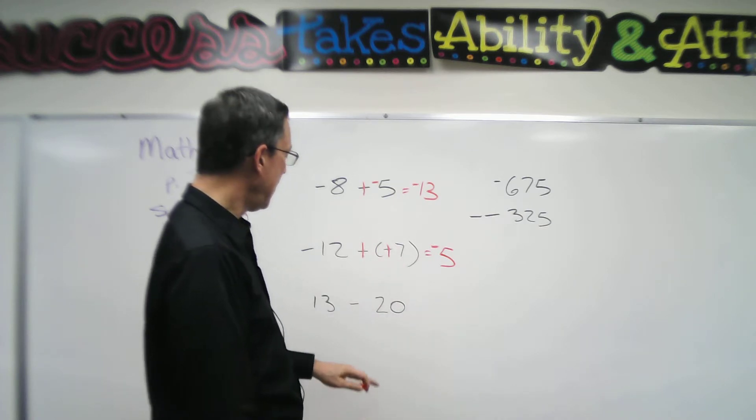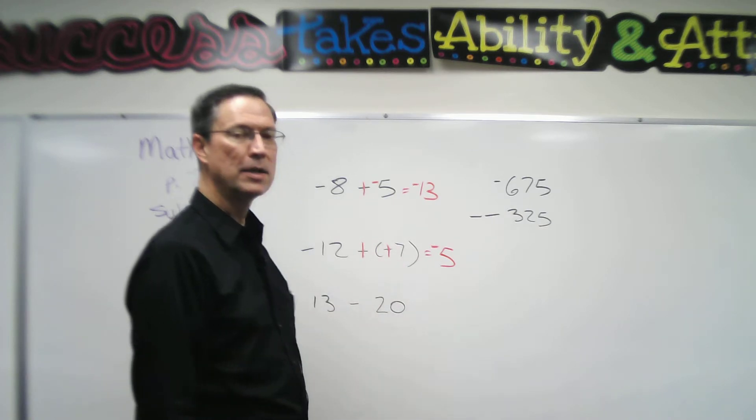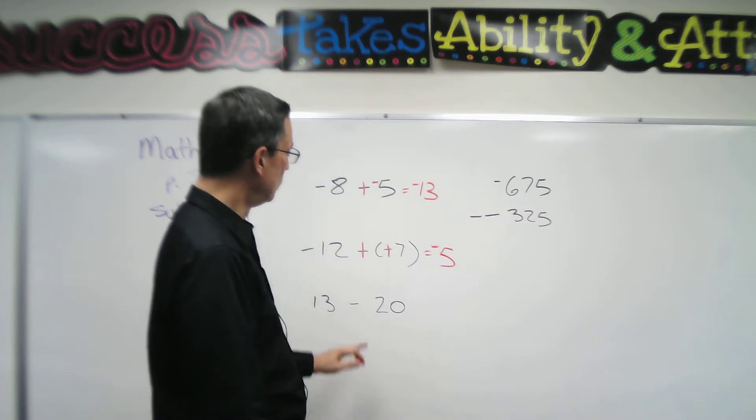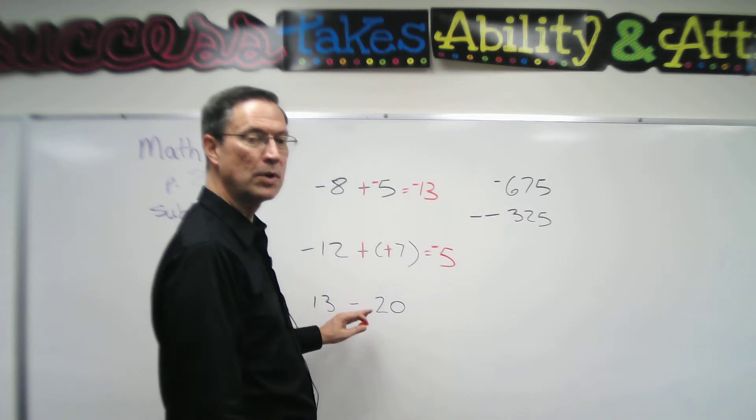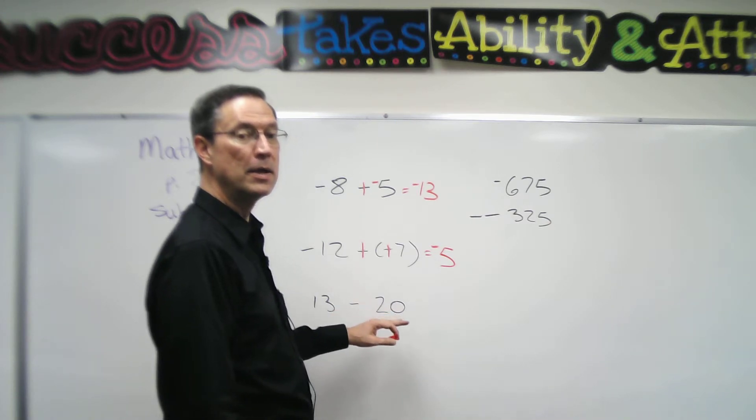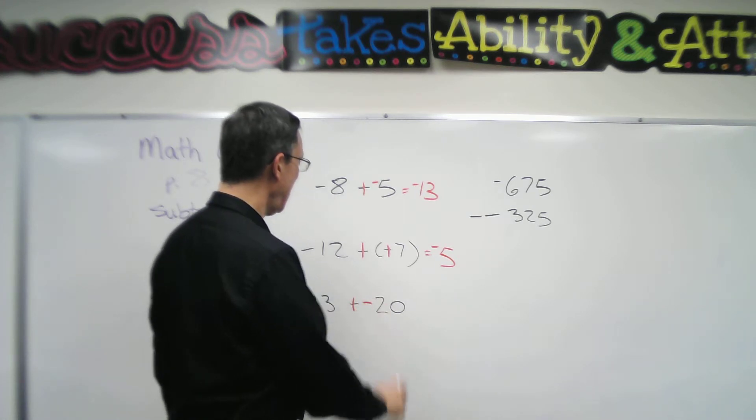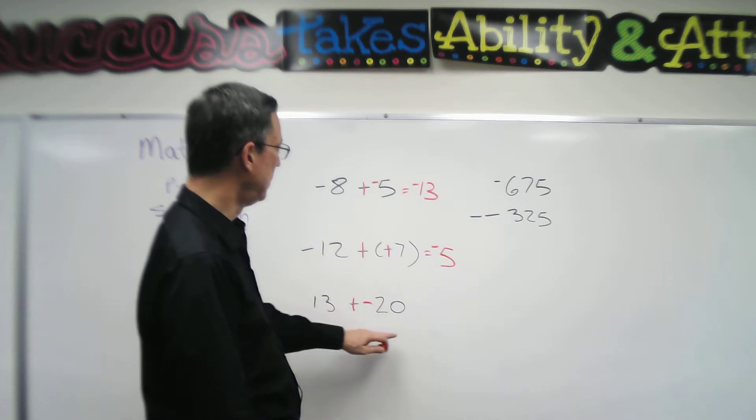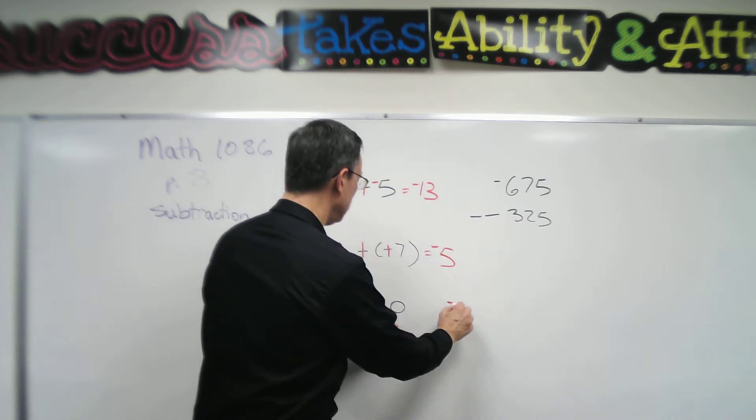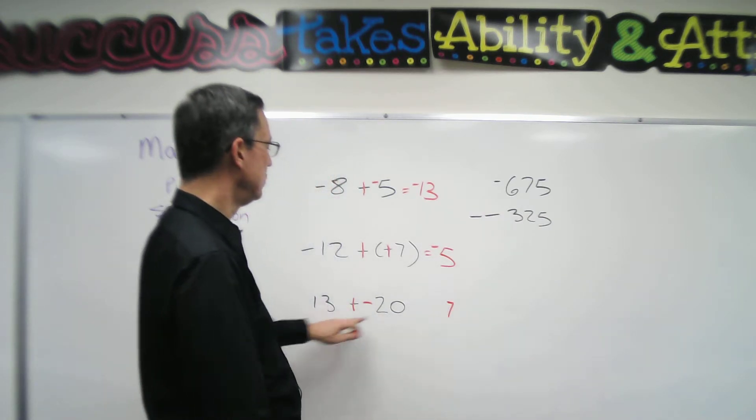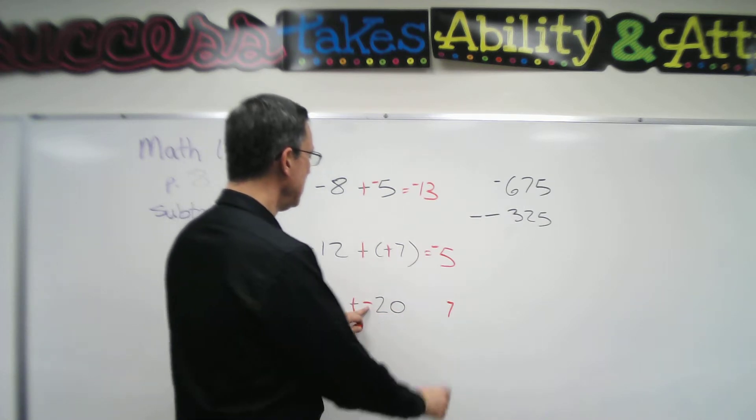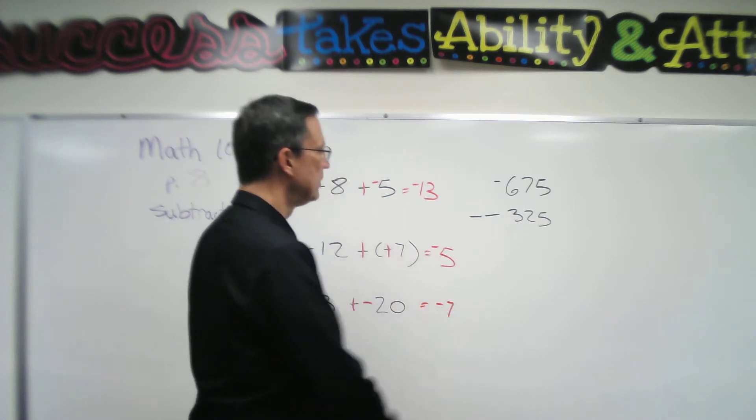Okay, you follow that? Let's try this one, 13 minus 20. The rule is the same, change subtraction to addition and change the second number to its opposite. Ah, now I need to subtract the smaller from the larger. So 20 minus 13 is 7, keep the sign of the larger. So I get negative 7.